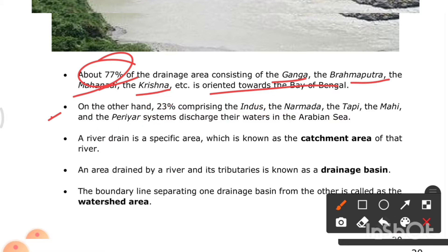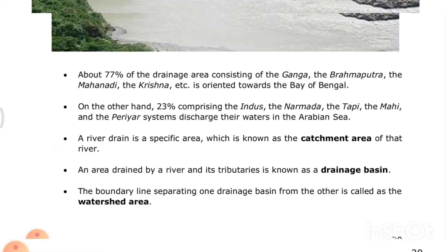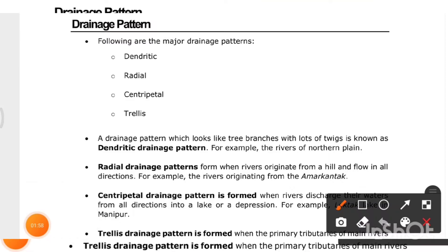A river drains a specific area which is known as the catchment area of that river. An area drained by a river and its tributaries is known as a drainage basin. The boundary line separating one drainage basin from another is called the watershed.